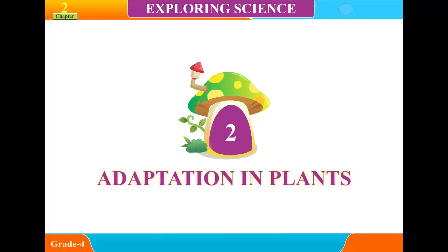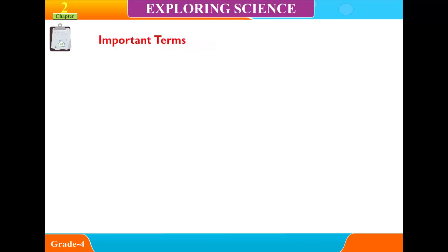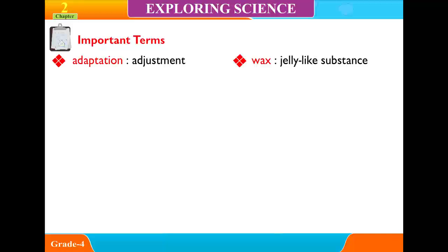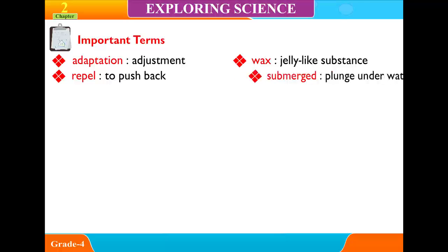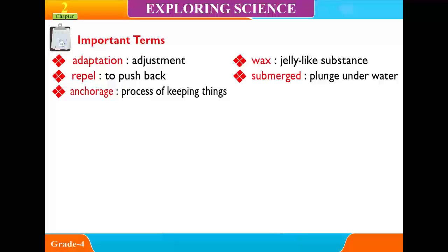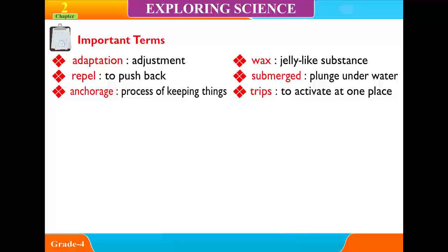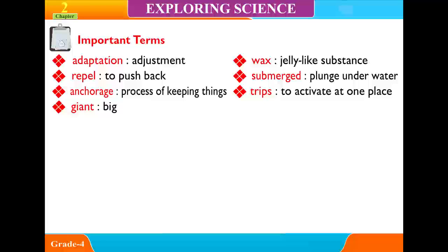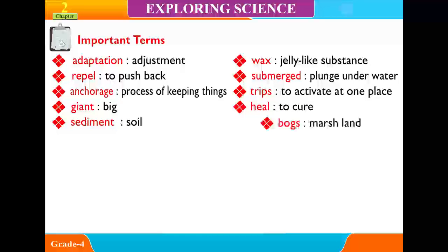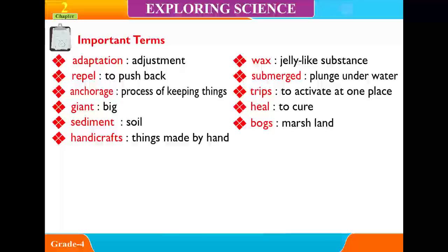Chapter 2: Adaptation in Plants. Important Terms: Adaptation, Adjustment, Wax, Jelly-like substance, Repel (to push back), Submerged (plunge underwater), Anchorage (process of keeping in place), Giant, Sediment, Soil, Marsh Land, Handicraft (things made by hand).